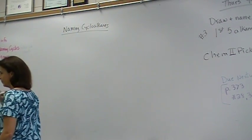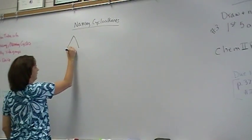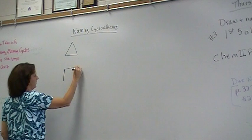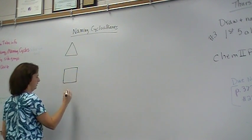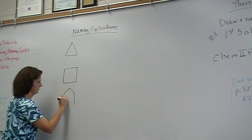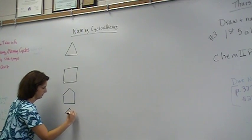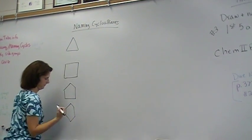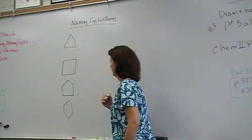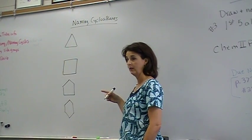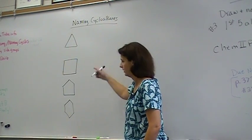Naming Cycloalkanes is pretty easy. We only have four base names to deal with. We've got a triangle, we've got a square, we've got a house, and we've got whatever that's called, a hexagon. Now, those are going to be our bases. Instead of the longest chains, we're going to use these.